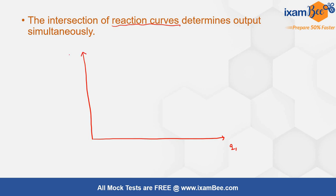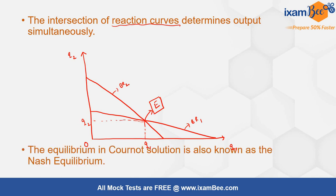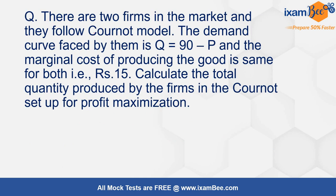If we have a q1 and q2 plane with the reaction curves BR1 and BR2 for both firms, the point at which these reaction curves intersect is the equilibrium point. Corresponding to this point, q1 and q2 are the quantities being produced. This equilibrium in the Cournot solution is also known as the Nash equilibrium of the game.